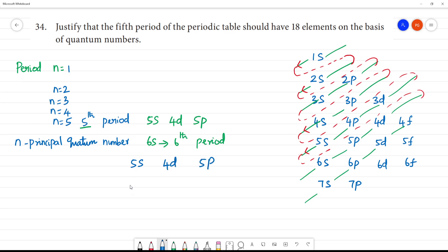5s has how many orbitals? 1 orbital, and this is orbital. 1 orbital will have 2 electrons. 4d has how many orbitals? 5 orbitals and 10 electrons. 5p has 3 orbitals and 6 electrons. So, total orbitals are 9 orbitals, total number of electrons are 18 electrons.